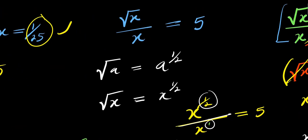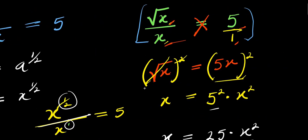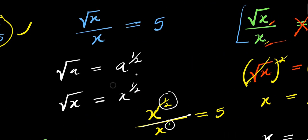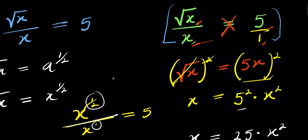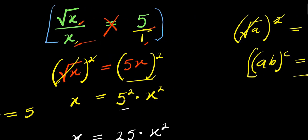So the only correct solution is x equals 1 over 25. To recap: you can solve this using two different methods — either cross multiply or convert the radical to exponent form. In both cases, you simplify, factor, and solve for x, then verify. That is it — thank you and goodbye.